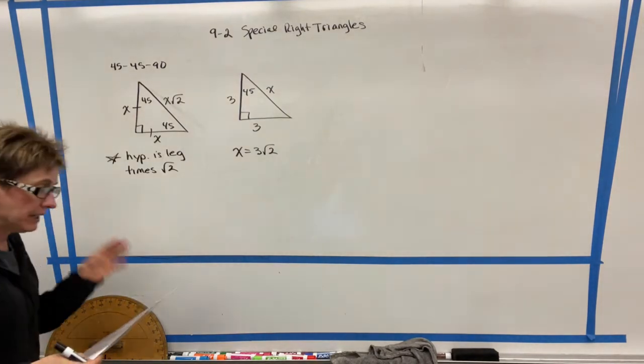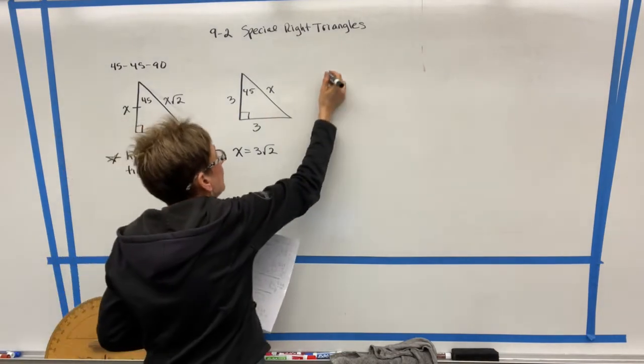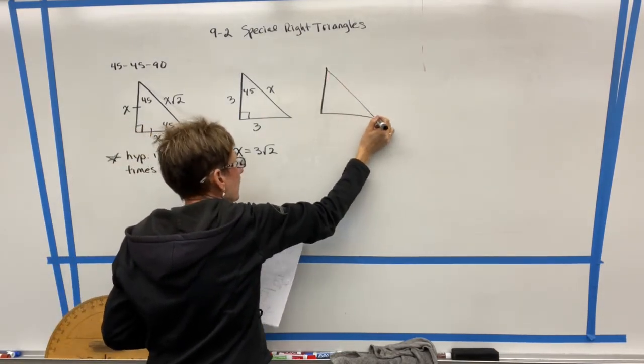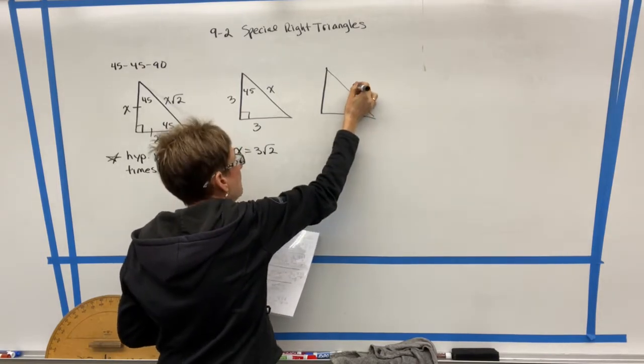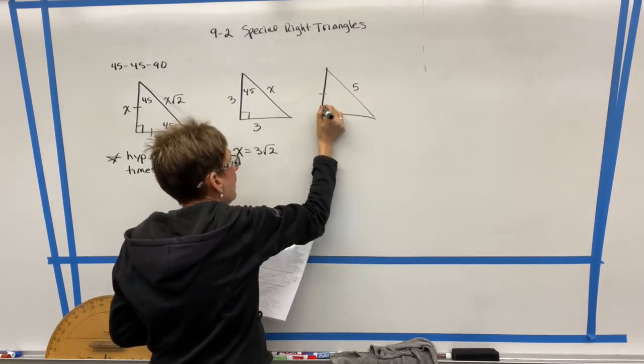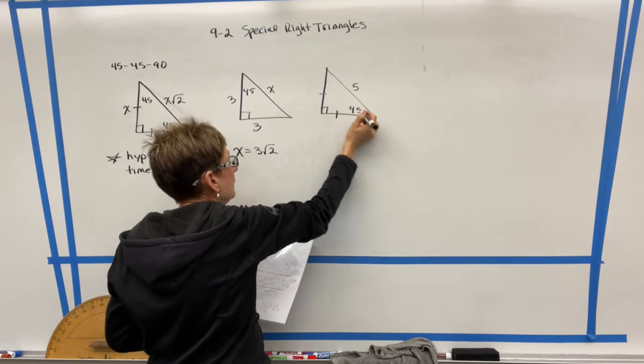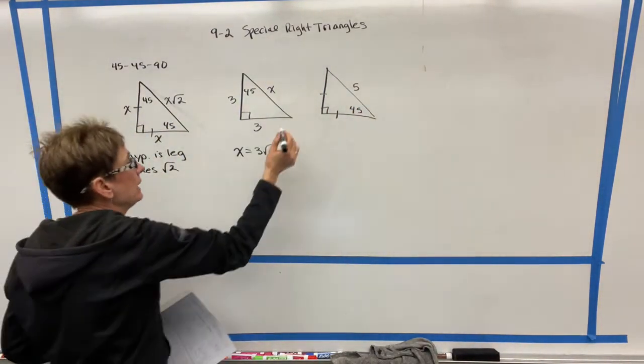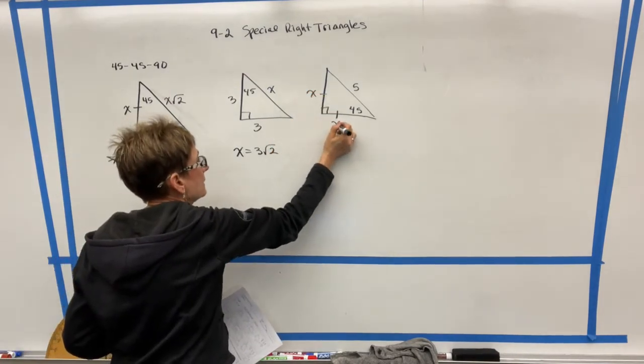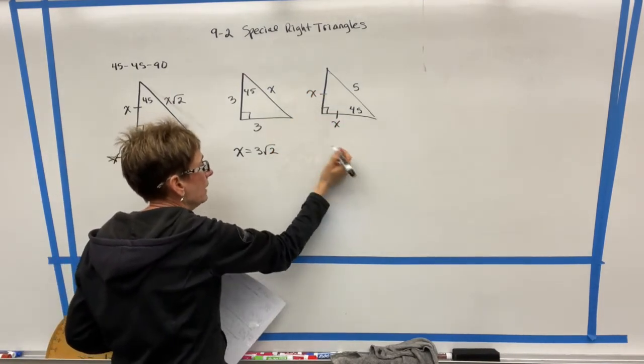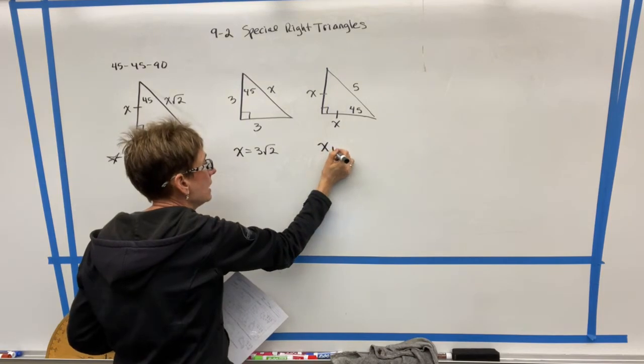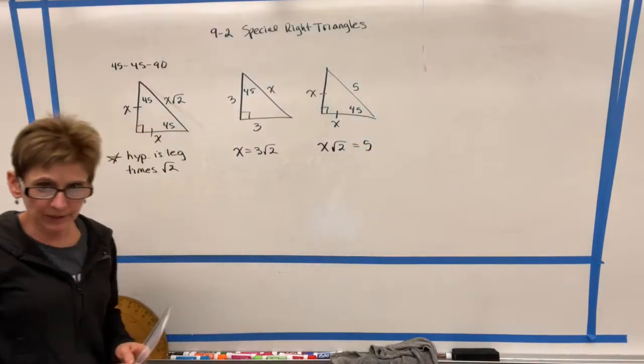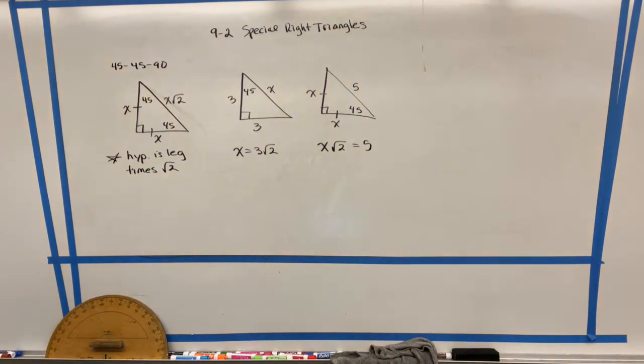That is the easy version of the problem. Now where it gets a little bit more complicated is where we are given the hypotenuse and the hypotenuse does not have a radical two in it. In this case, we would label our sides with x and we would have to say, Okay, I know that the leg times radical two has to equal five because I know this is a 45-45-90 triangle.